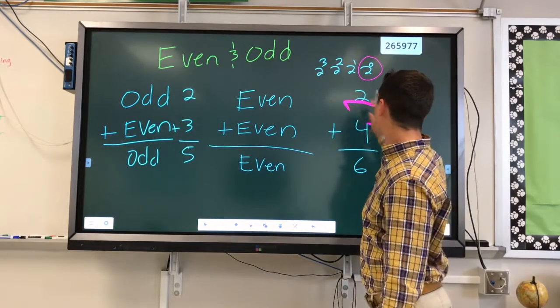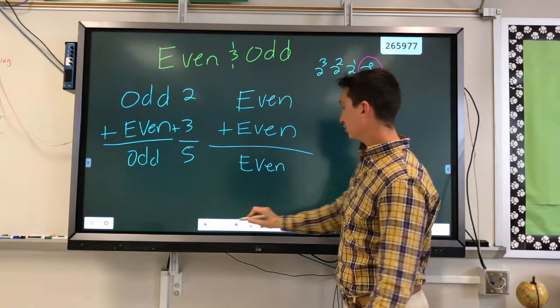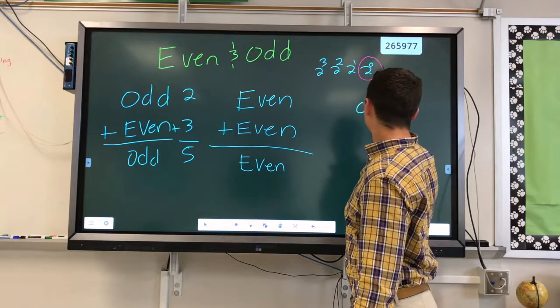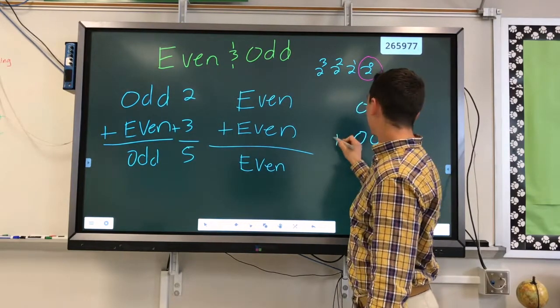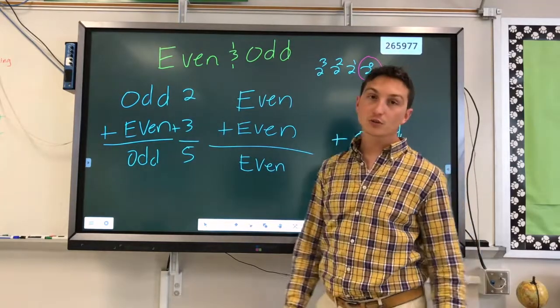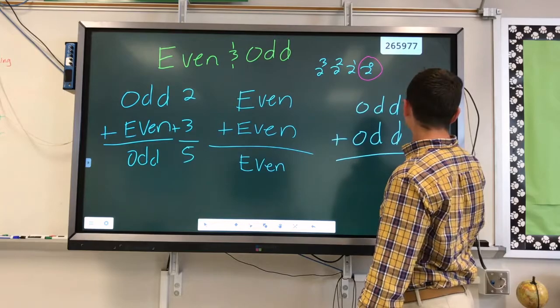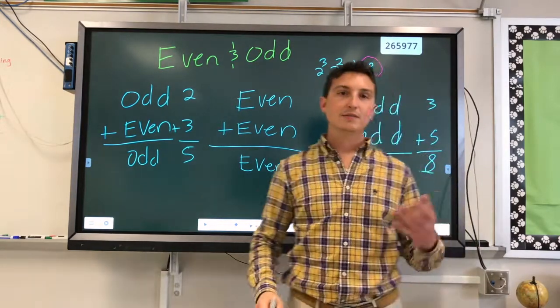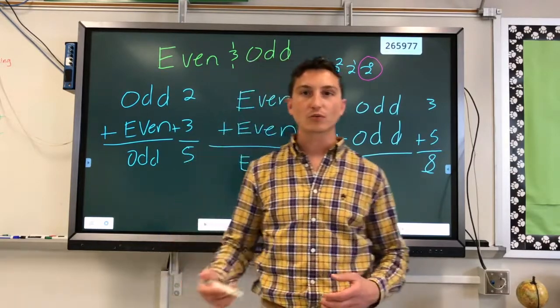And just so I don't leave you hanging here, odd plus odd, in case you're curious, what's that? That's also always going to be even. So say 3 plus 5 equals 8. 5 plus 7 equals 12, so on and so forth.